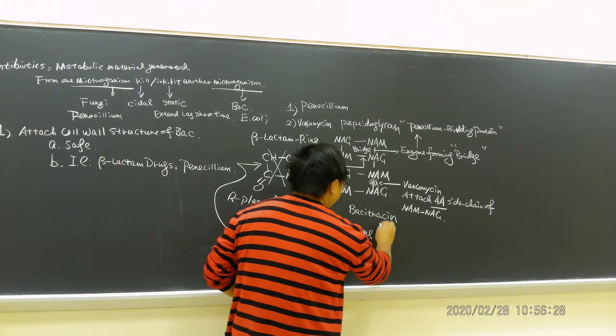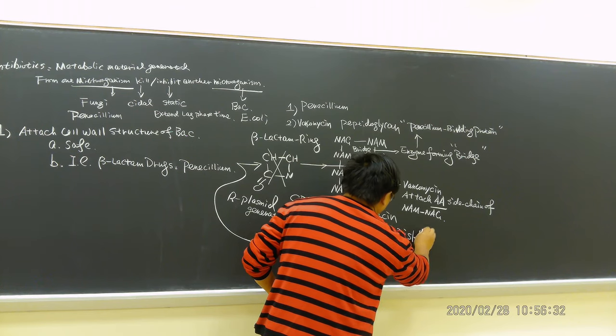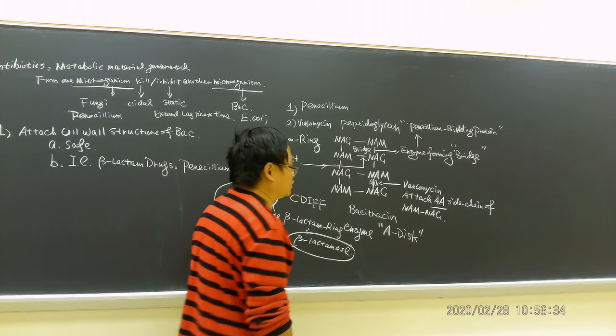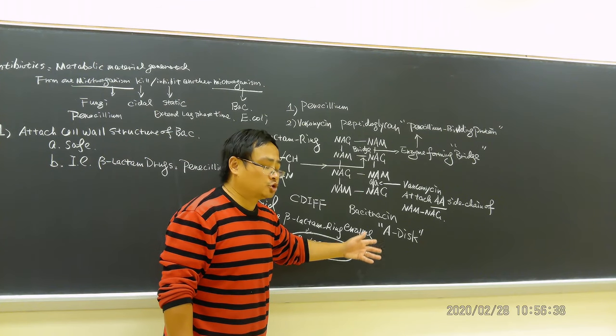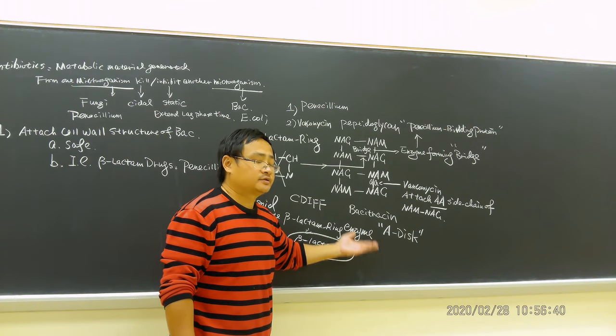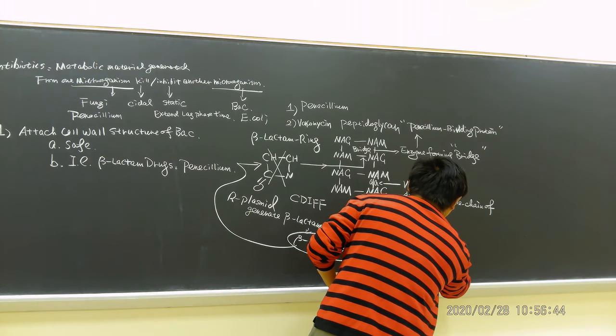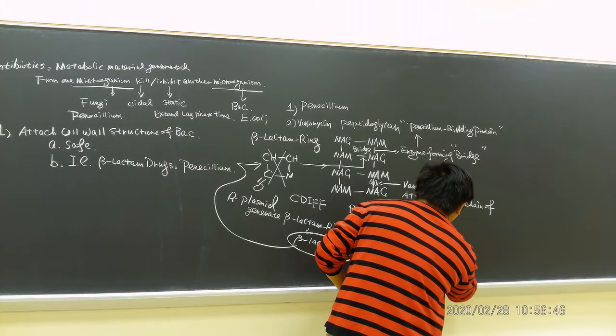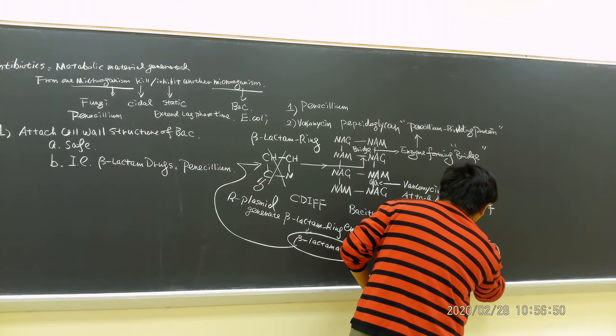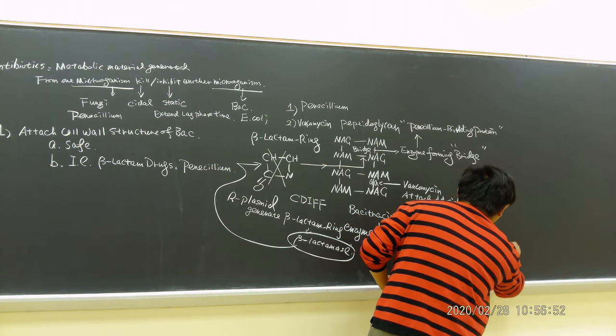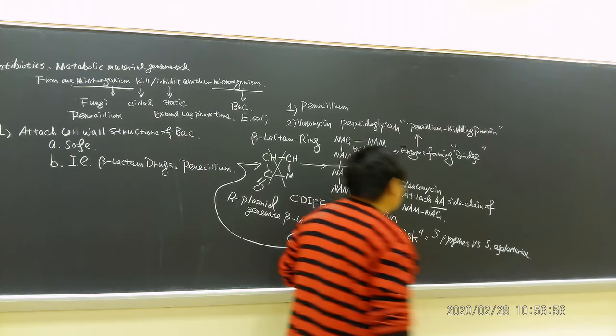This beta-lactamase can actually hydrolyze this ring, take the ring off. So what happens? The bacteria can become penicillin resistant or vancomycin resistant. If the bacteria has been resistant to both, what should we do? We have to use another one, bacitracin.